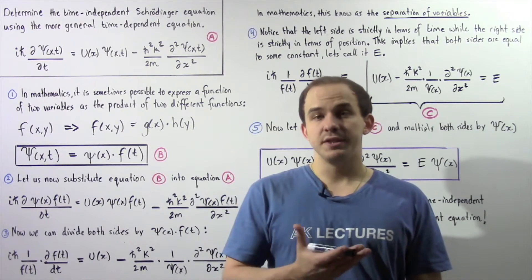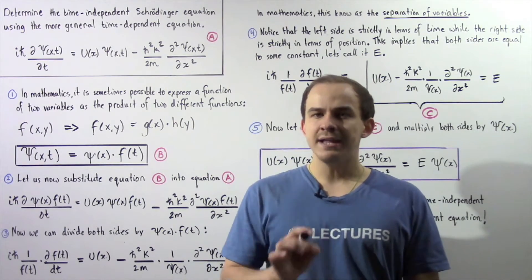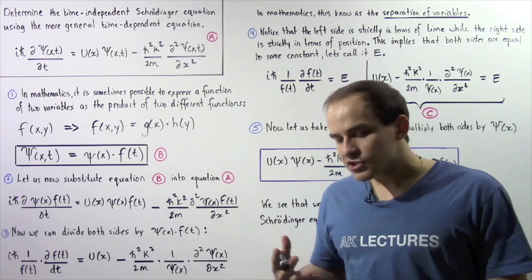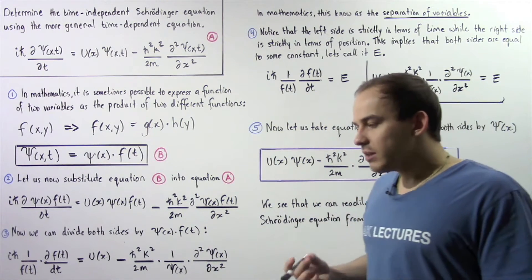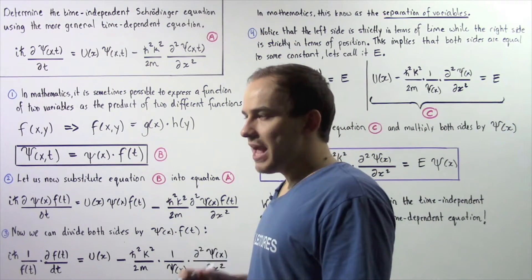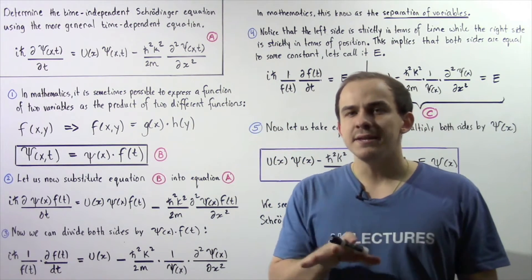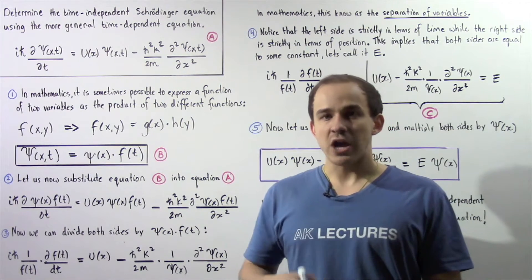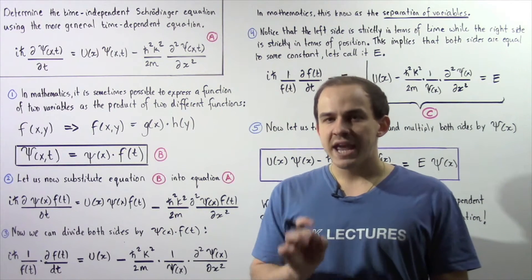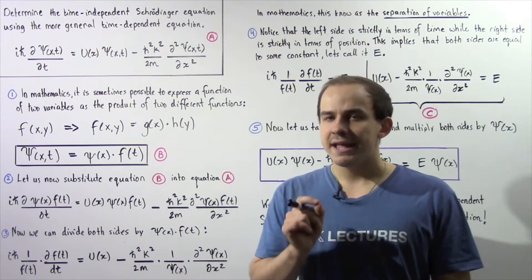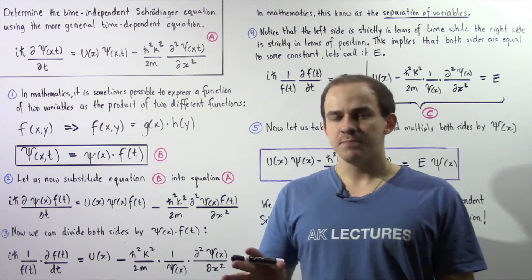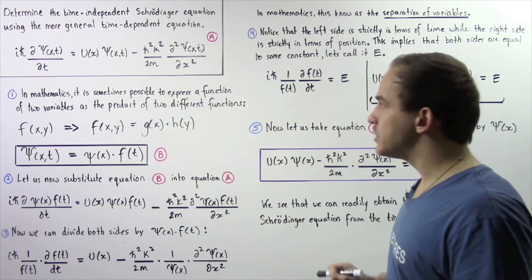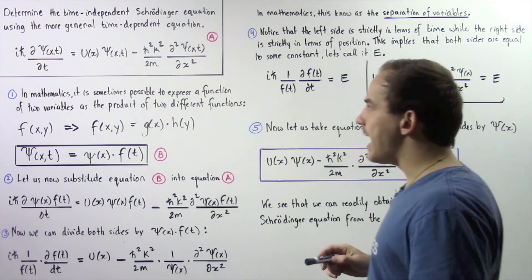In the previous lecture, we discussed the time-dependent Schrödinger equation. Now, let's actually take this equation, solve it, and try to obtain the time-independent Schrödinger equation. In this lecture, our goal will be to obtain the time-independent Schrödinger equation from the more general time-dependent Schrödinger equation given by equation A.